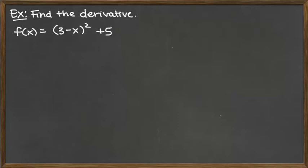In this problem, the function that we're given is actually a polynomial, though it may not look quite like a typical polynomial would. The way that it's written, it has the factor 3 minus X that's squared, and then to it we're adding 5.